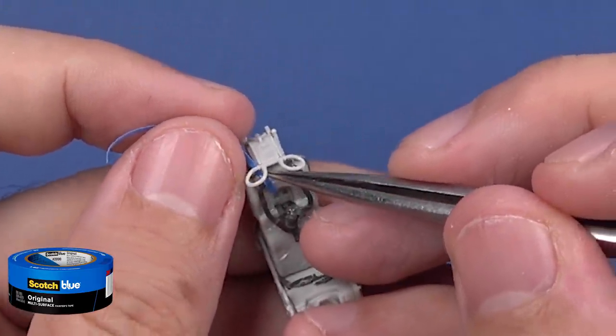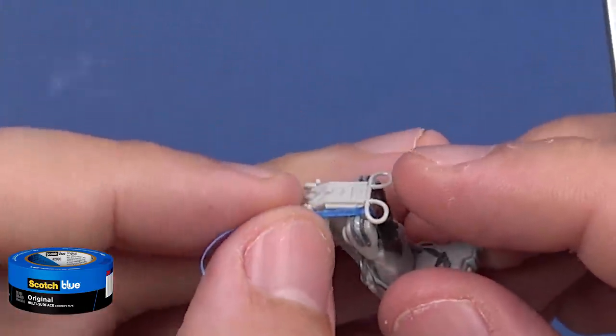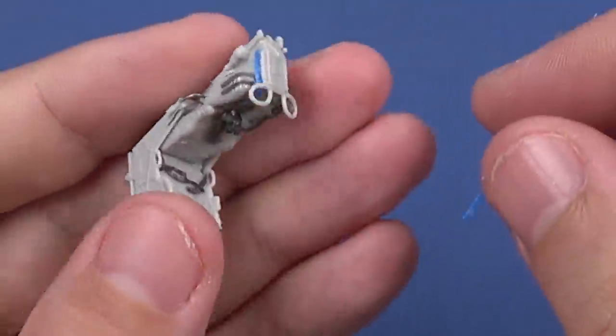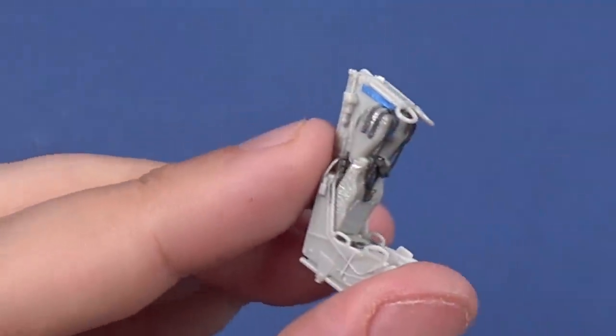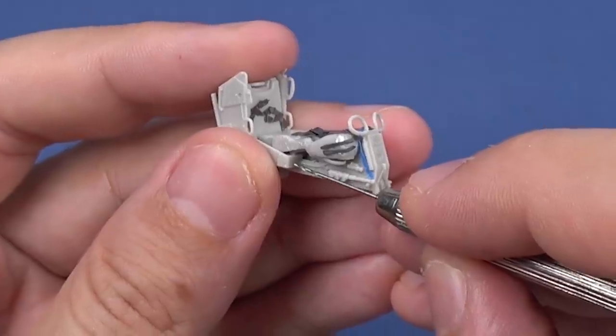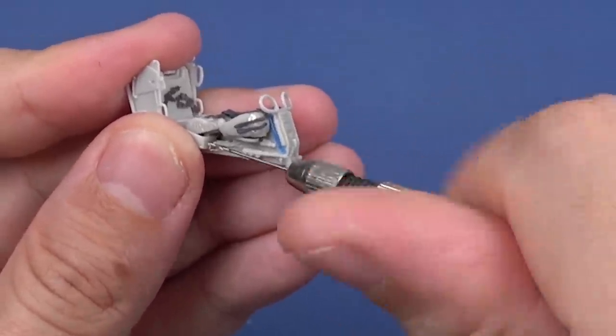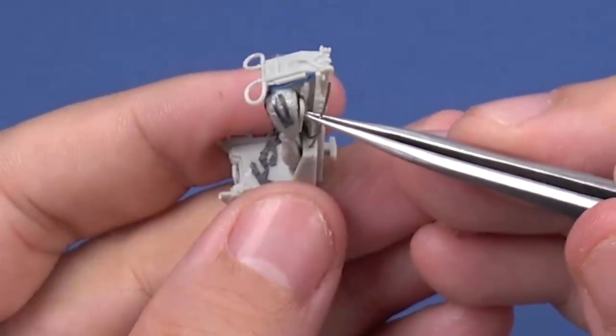I cut this strip from 3M blue masking tape. And that's it. One last thing. I am adding the pipe and wire details using lead wires.